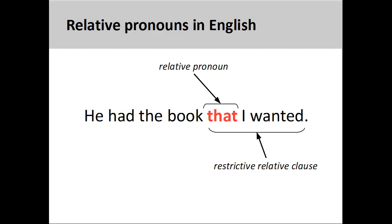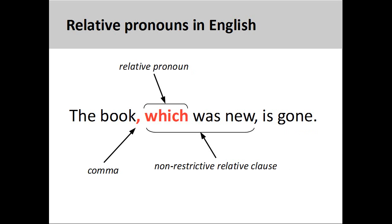Other relative pronouns in English include who, whom, whose, and which. In English, a restrictive relative clause gives us essential information about the noun it modifies and is not set off by a comma. A non-restrictive relative clause, however, provides us non-essential information about the noun it modifies and is set off by a comma. I raise this point to introduce an important feature of German relative clauses: as we will see in the coming slides, all relative clauses in German are set off by a comma.